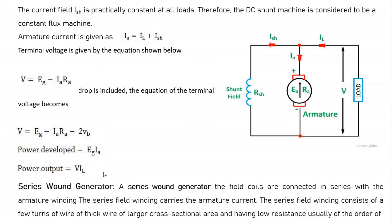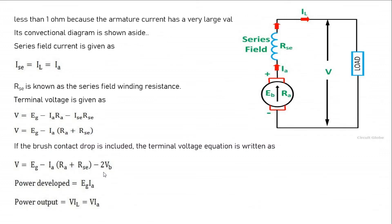Next is the series wound generator. In a series wound generator, the field coils are connected in series with the armature winding. The series field winding carries the armature current. It consists of a few turns of thick wire of larger cross-sectional area, having low resistance usually less than 1 ohm. All currents are equal here — ISC = IA = IL — since the series field winding is in series with both armature and load, forming one single circuit with one current.